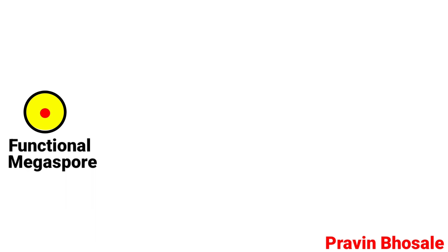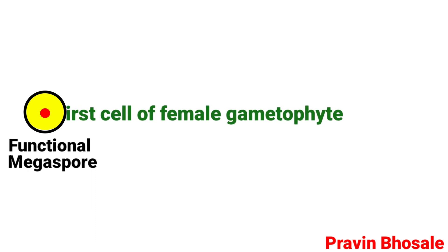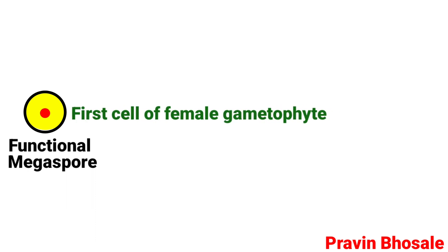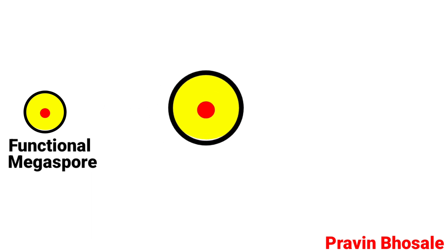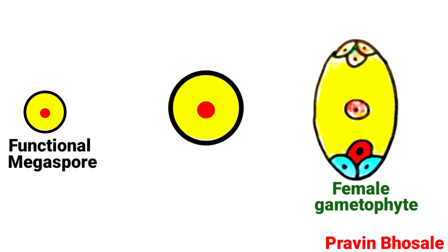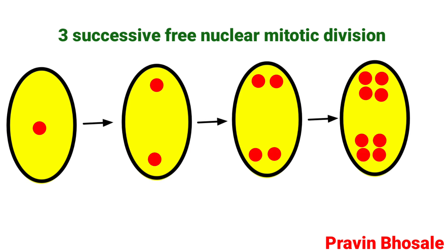The functional megaspore is the first cell of the female gametophyte. It undergoes enlargement and develops into a female gametophyte. The haploid nucleus of the functional megaspore undergoes three successive free nuclear mitotic divisions.